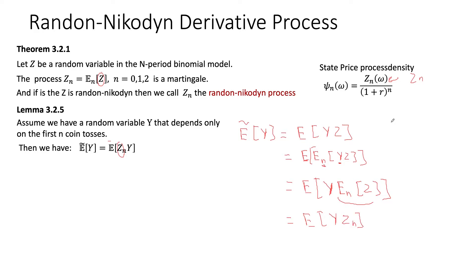And voila. And this is actually quite profound. So it means if Y depends only on the first n coin tosses, then we don't really need to have the Randon-Nikodym derivative. We can just use the Randon-Nikodym derivative process at time n. And using that, we can convert the probability from the risk-neutral world to the real world. And that's it for that.